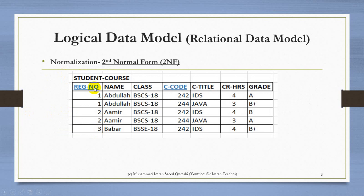Looking at our 1NF table, if reg number can determine name and class — if I give you reg number 1 without giving course code 242, you can easily tell me 'Abdullah, BSCS 18' — so name and class are dependent upon reg number alone. Similarly, if I give you course code 242, you can tell me the course title is IDS and credit hours are 4, or 244 is Java with 3 credit hours. So title and credit hours are dependent upon course code alone.